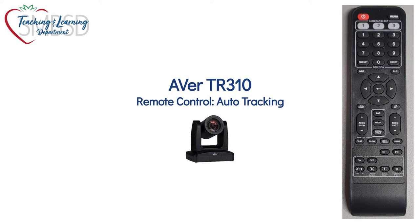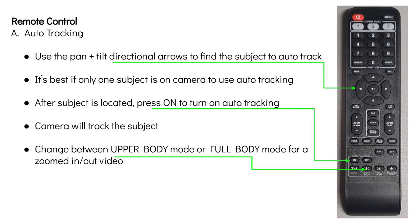Auto tracking with the TR310 camera. To begin, use the directional arrows to find your subject. It's best if one subject is in front of the camera for this. Tilt and pan with the directional arrows. Once that subject has been identified, press ON, and this will begin the auto tracking.